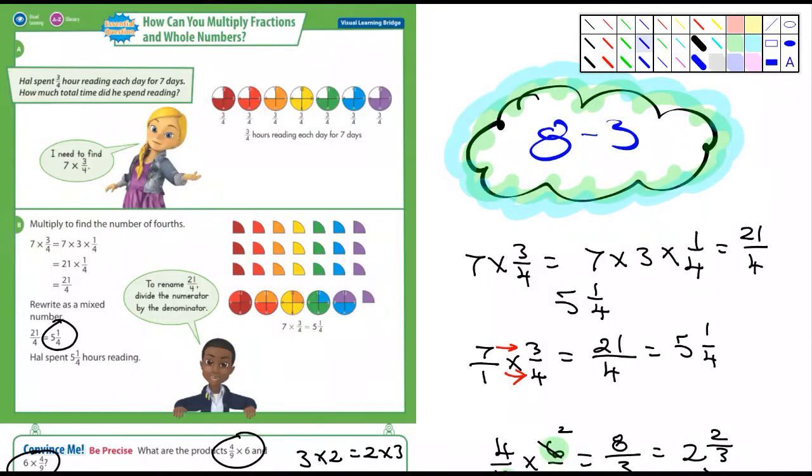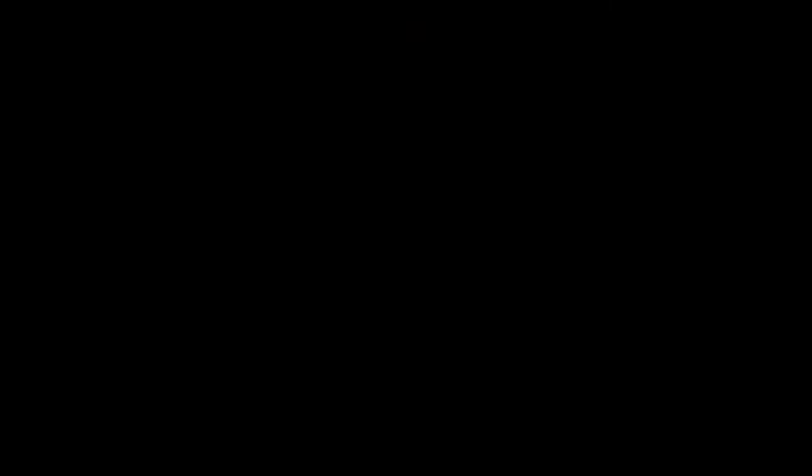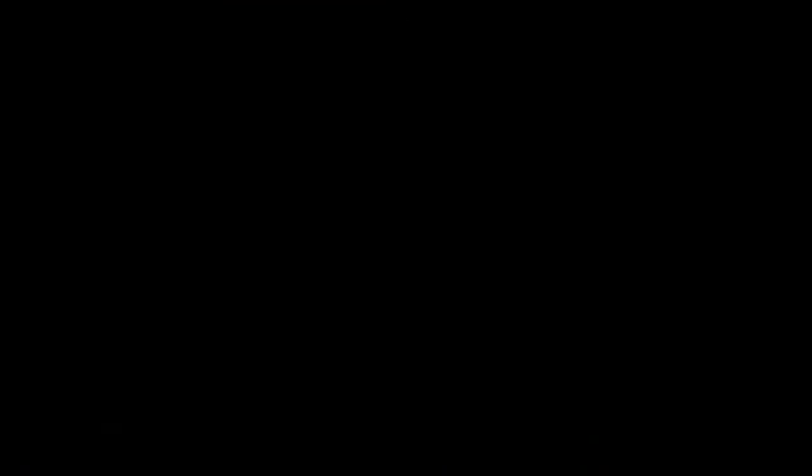We're talking about multiplying fractions and whole numbers again. So let's look at this first example. It says that she needs to find 7 times 3 quarters. And so one way to look at it is you're adding 3 quarters 7 times. That's easy to do because the denominators are the same. They're all 4. So you just add up the numerators. And so what's 7 times 3? That's gonna be 21. And so that's what you end up with, 21 over 4 right down here in B. And then that's an improper fraction. The numerator is larger than the denominator. So that's gonna be 5 and 1 quarter.